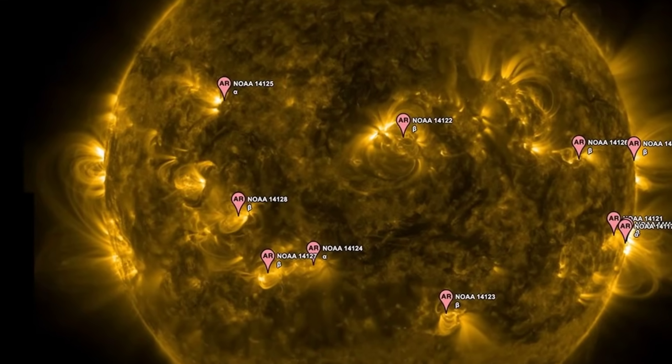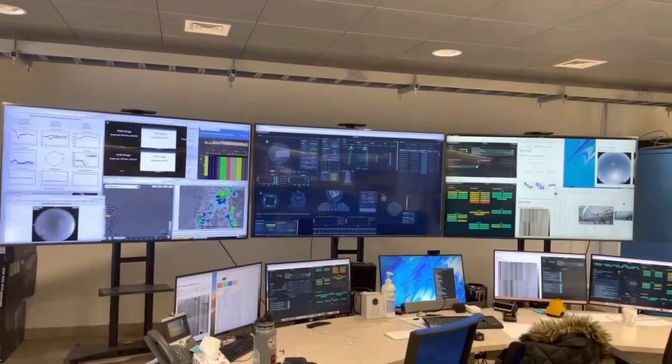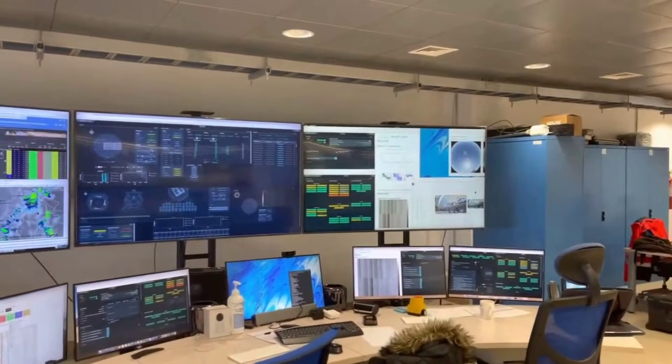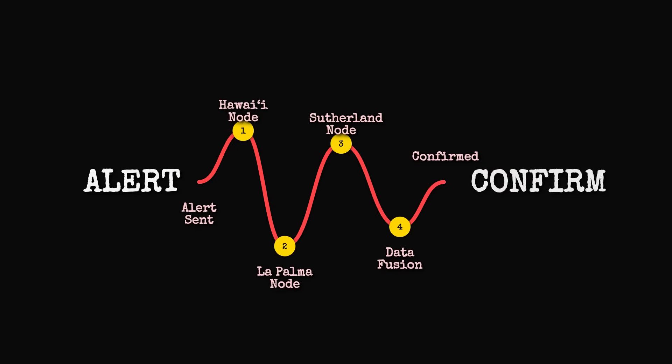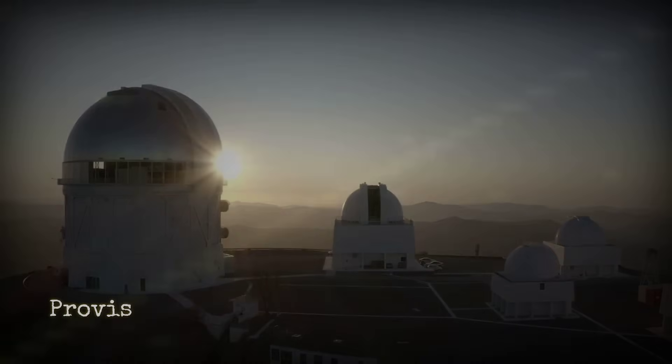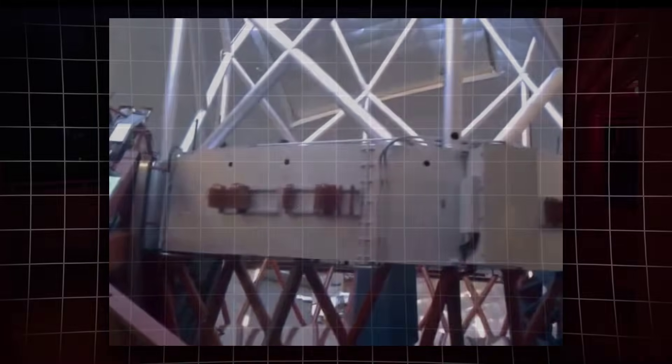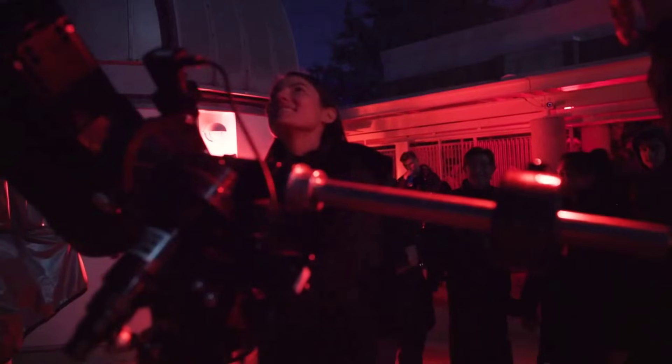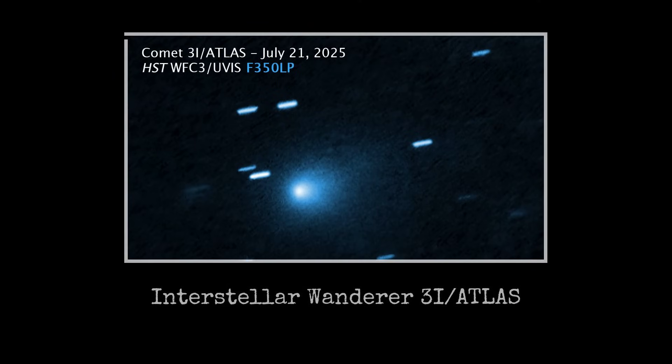Mission logs record the tension in real-time. Operators debate the odds of a third interstellar visitor in less than a decade. Data packets and voice messages fly between continents, each new measurement narrowing the uncertainty. By sunrise in Chile, the object has a provisional name: 3I-Atlas. The world's telescopes pivot to follow. For a few hours, every eye in astronomy is focused on a single, silent traveler from beyond the solar system.